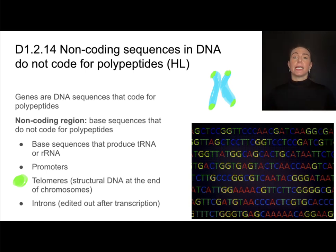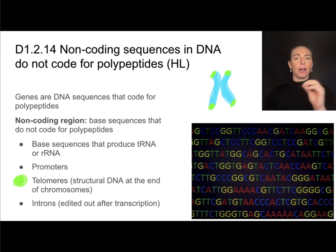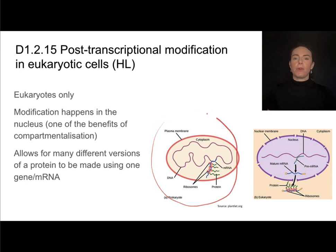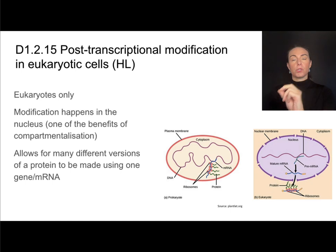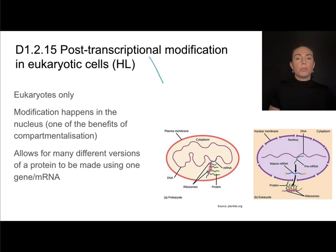And then there are introns. Introns do not get translated into a polypeptide — they're actually edited out after transcription. We'll go into more detail in a bit. In prokaryotes, transcription and translation are actually happening simultaneously. So as that mRNA is being synthesized, the part that's already built is getting translated by the ribosomes. This is super efficient, but it does not allow for post-transcriptional modification.